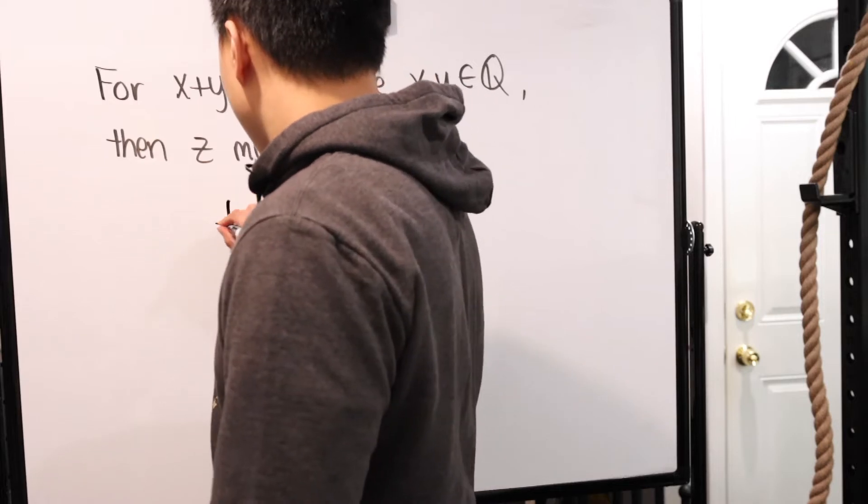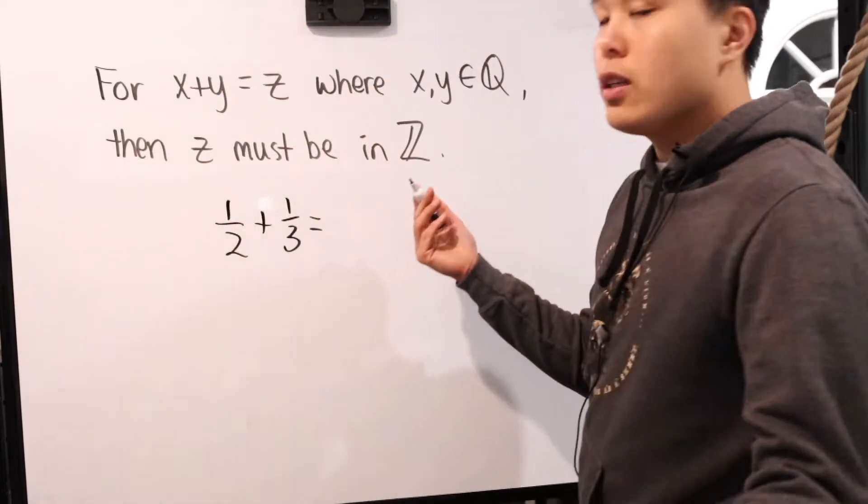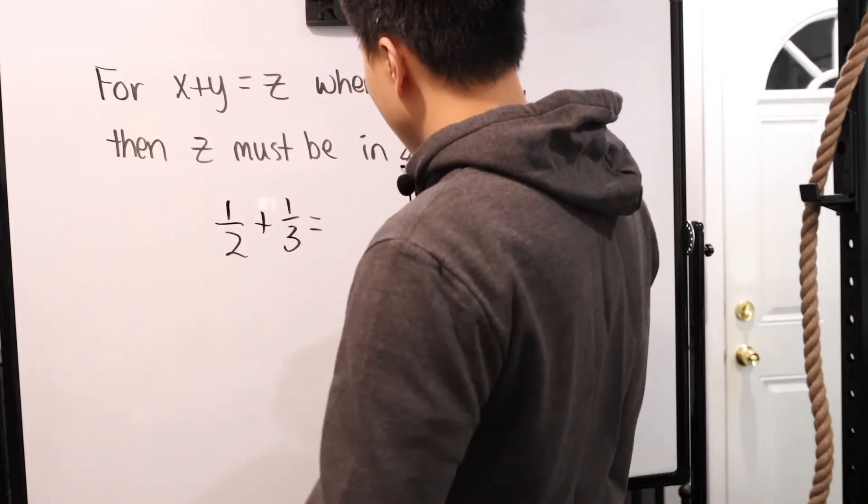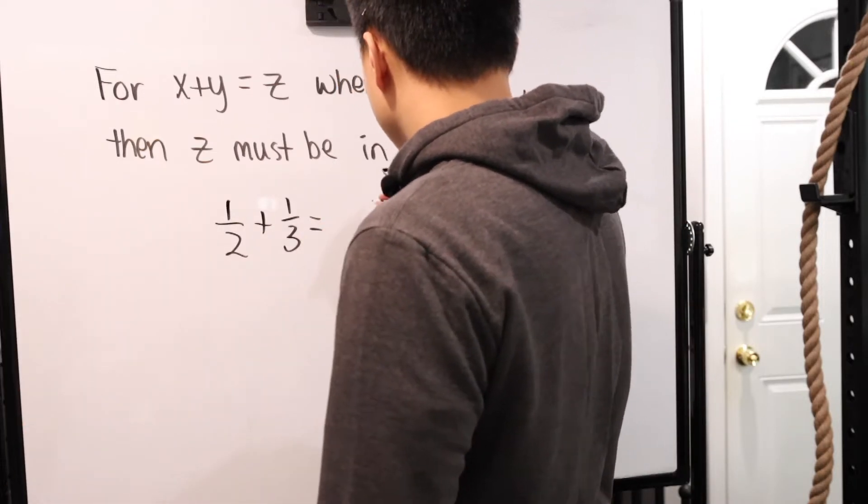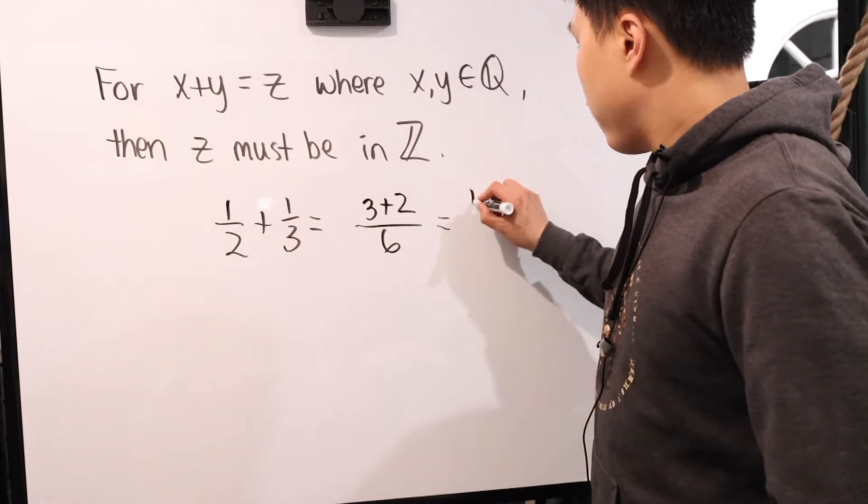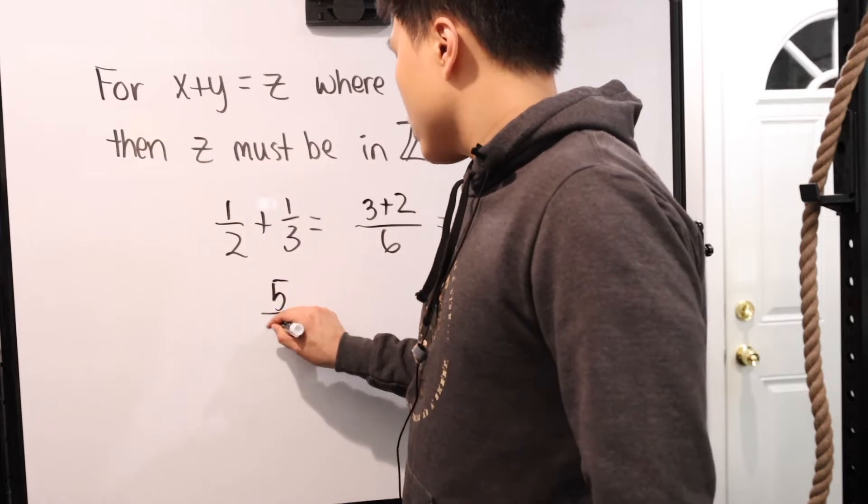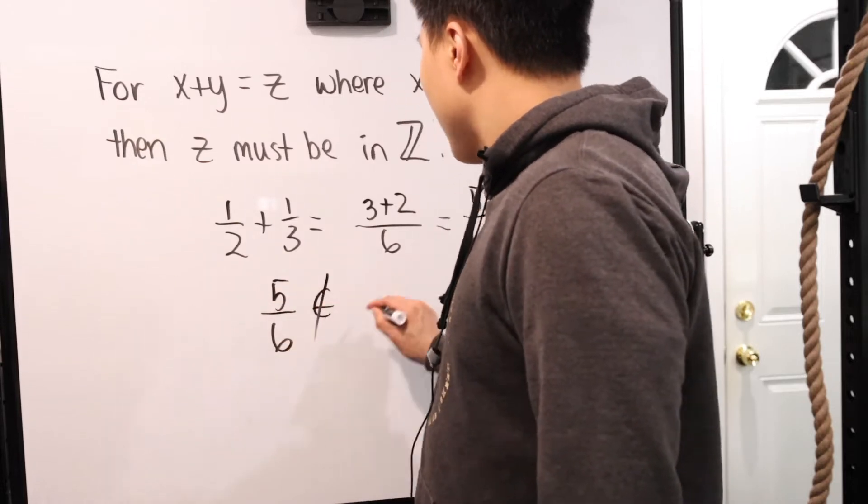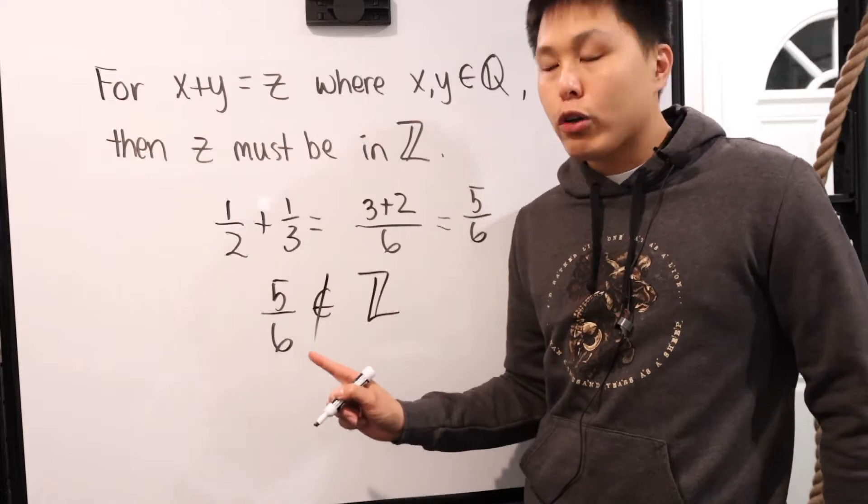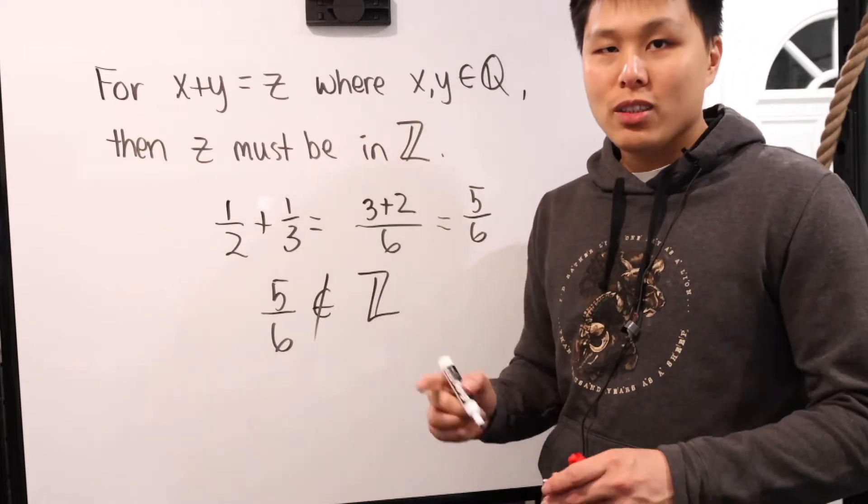Let's just pick some easy ones. Let's just say one half plus one third. If we simplify everything and make everything common denominator and do all the lovely stuff, we basically have three plus two over six, which gives us five over six. Well, guess what? Five over six is not an element of the integers. And therefore, just from this counter example, we've shown this statement is false.